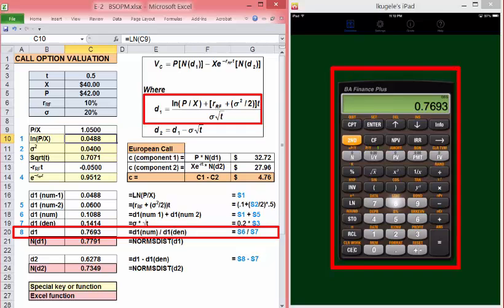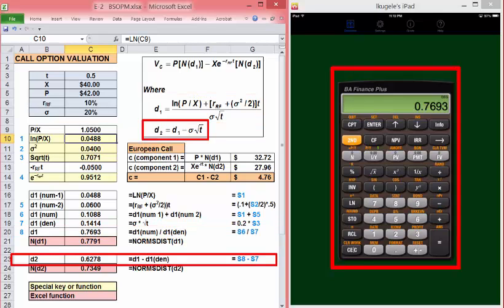And we store that in 8. To get d2, we're going to recall 8, minus recall 7. While this step-by-step is laborious, it's by far the safest approach to solving any complex equation with multiple components. And certainly is the best approach to solving an involved formula like the Black-Scholes model.